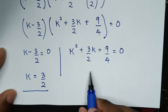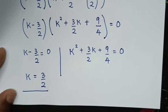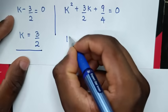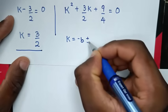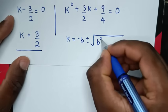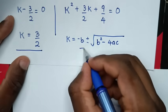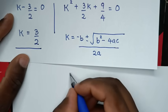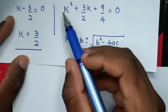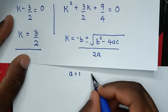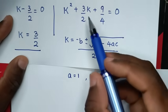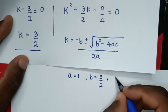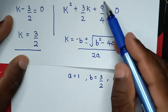Now let's solve the second solution, which is a quadratic equation. We will use the quadratic formula: k is equal to negative b plus or minus the square root of b squared minus 4ac, over 2a. From the equation, a is equal to the coefficient of k squared, which is 1. b is equal to the coefficient of k, which is 3 over 2. And c is equal to the constant, which is 9 over 4.